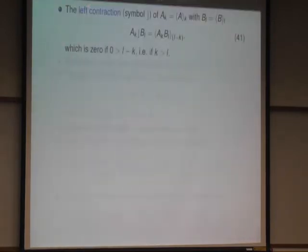And so left contraction is simply take a blade Ak from the left and a blade Bl from the right and extract from the geometric product the L minus K part. And if L minus K is negative, the result is zero.